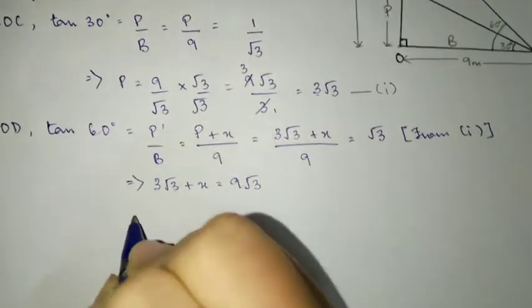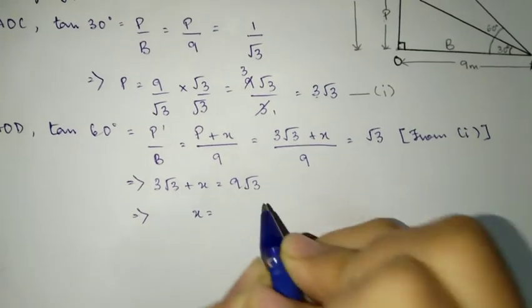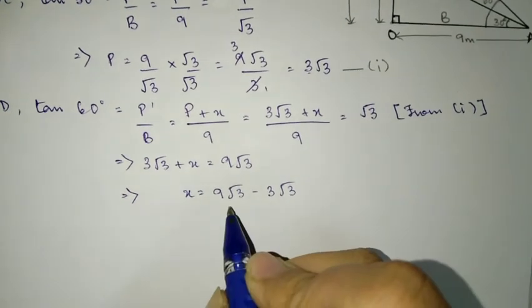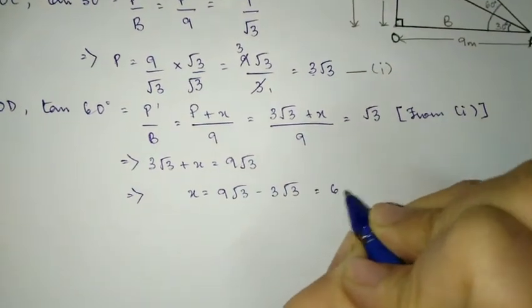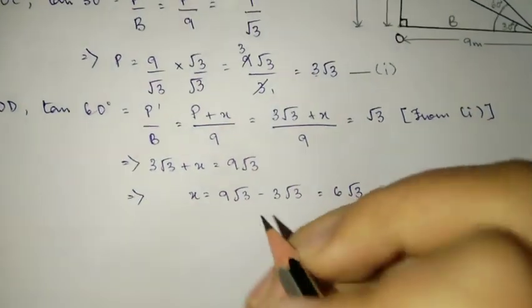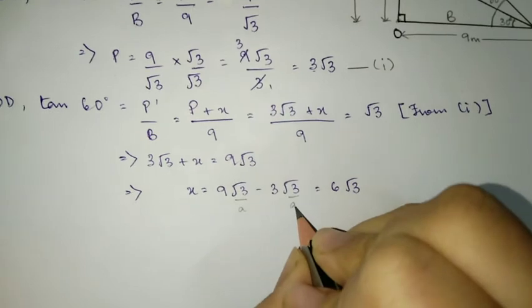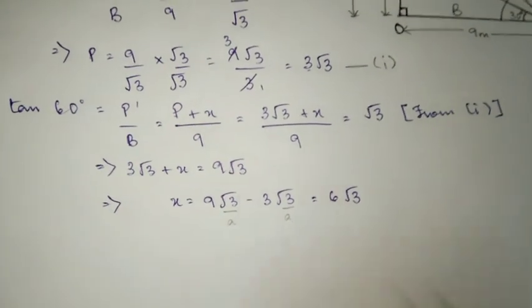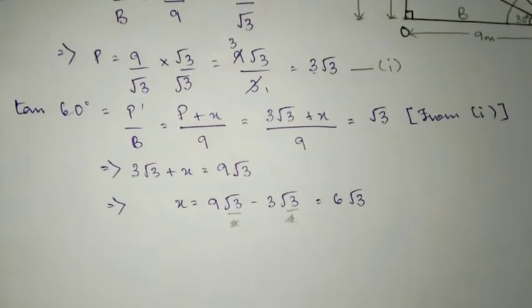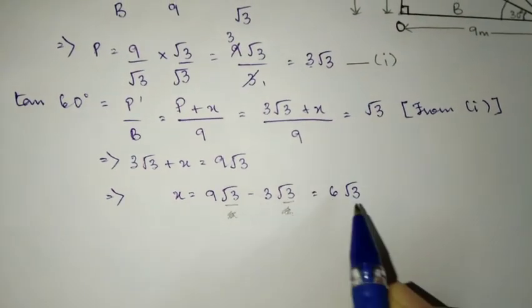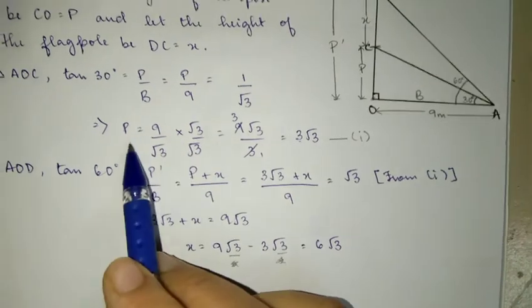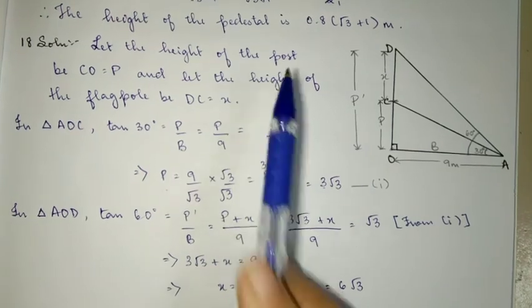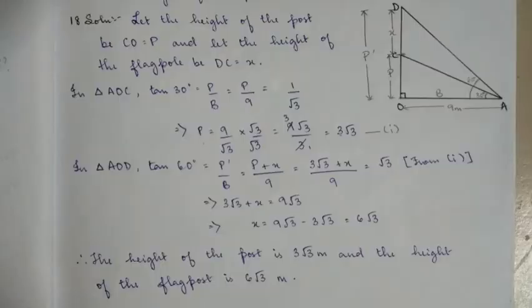Now let's solve it. If you shift 9 to the other side, cross multiply it, you get 9 into root 3. Now you want to know X, so move 3 root 3 to the other side, it will become minus. 9 root 3 minus 3 root 3 will give you 6 root 3. 9 root 3 minus 3 root 3 will give you 6 root 3. So you know X and you know that X is the height of the post, sorry, P is the height of the post and X is the height of the flag, okay. So this is the final answer, alright.